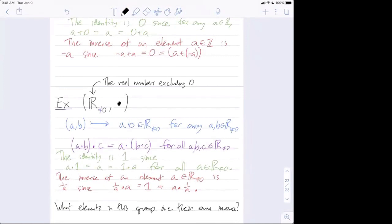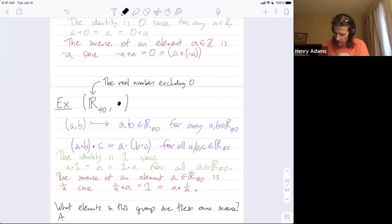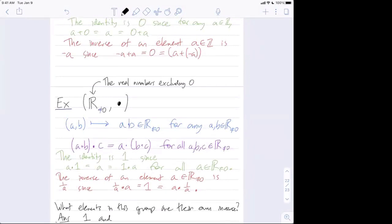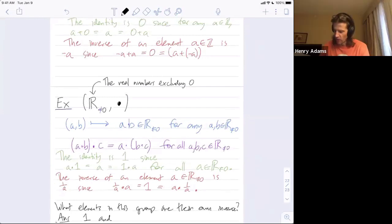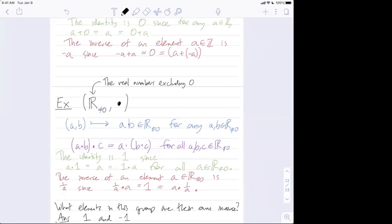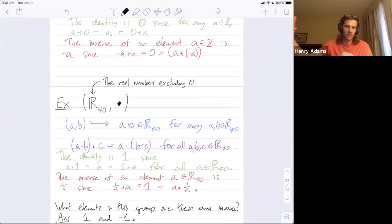One. One. And there's one other. Zero? No, zero is not a part of it. Zero is not even in this group. One and negative one. Yeah because negative one times negative one is equal to one. The identity is always its own inverse.